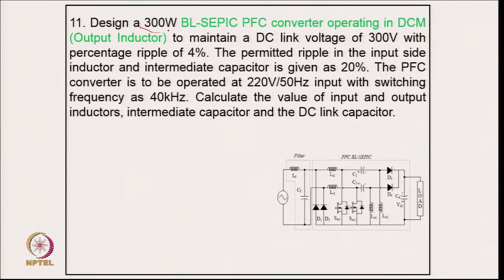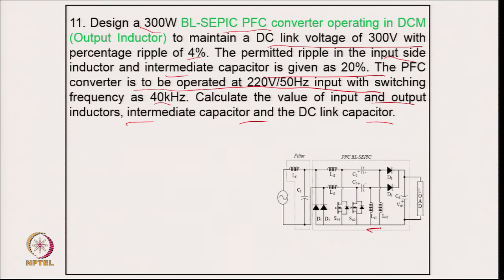Example 11: design a 300 W bridgeless SEPIC power factor correction converter operating in discontinuous mode only for the output inductor, to maintain a DC link voltage of 300 V with 4 percent ripple. Permitted ripple in input side inductor and intermediate capacitor is 20 percent. The converter operates at 220 V, 50 Hz with a switching frequency of 40 kHz. In the bridgeless SEPIC circuit, input inductors, energy transfer capacitors, and output inductors are identical. The output inductors are designed in DCM to enable inherent PFC using the voltage follower approach.